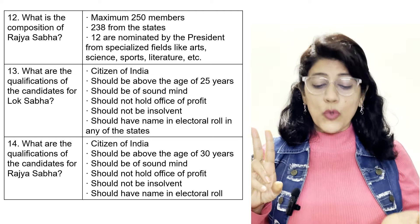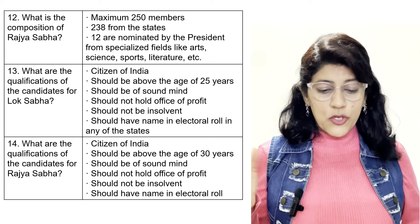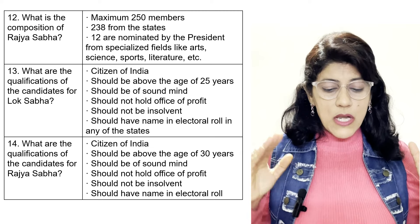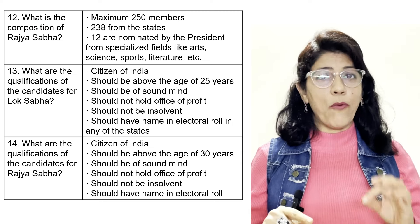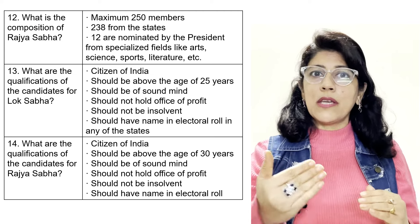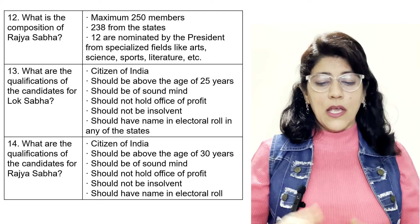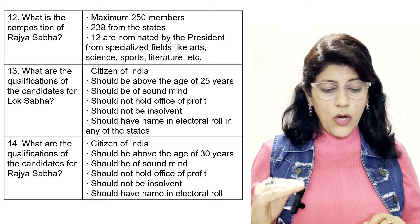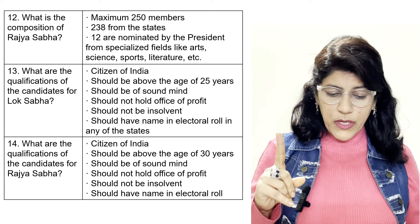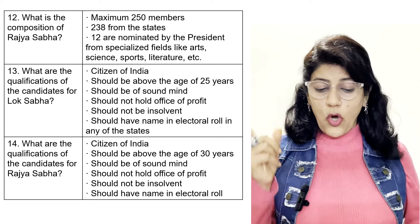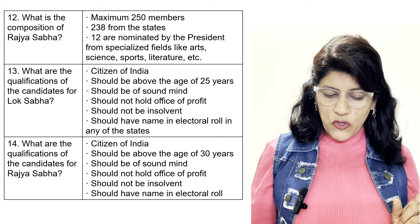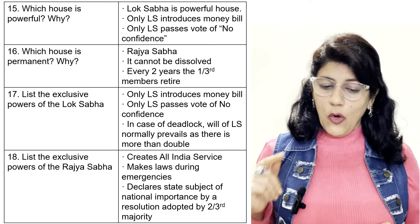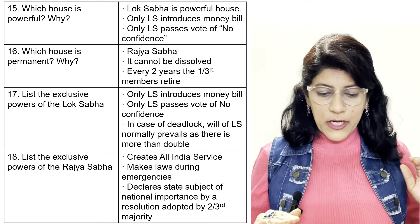What are the qualifications of a candidate for Lok Sabha? Citizen of India, should be above the age of 25 years, should be of sound mind, should not hold office of profit, should not be insolvent, and should have their name in the electoral roll in any of the states. For Rajya Sabha: citizen of India, should be above the age of 30 years, should be of sound mind, should not hold office of profit, should not be insolvent.